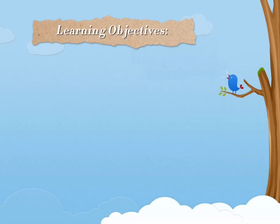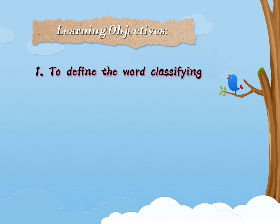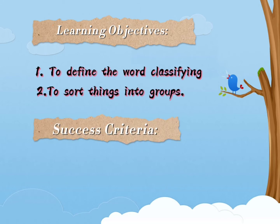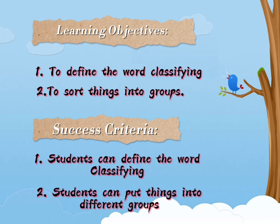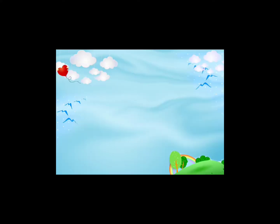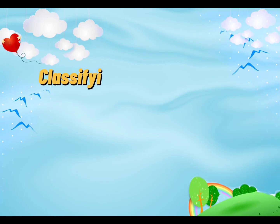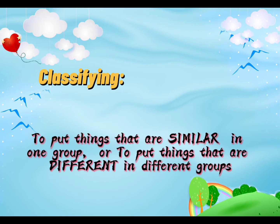So what is our learning objective and success criteria for today's class? At the end of the class you should be able to define the word 'classifying', you should know how to say the meaning of classifying, and you should be able to put things into groups.